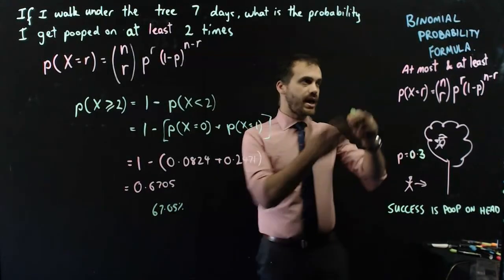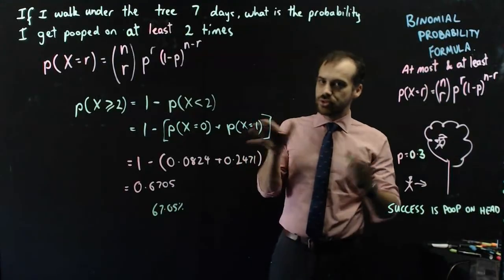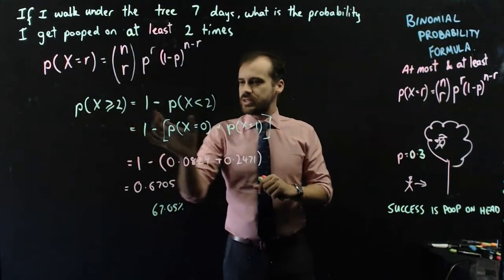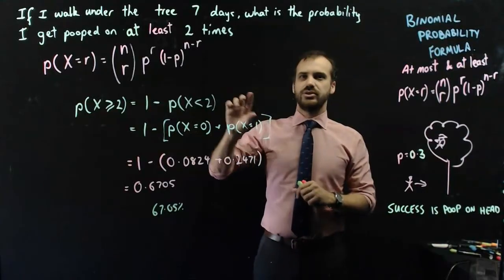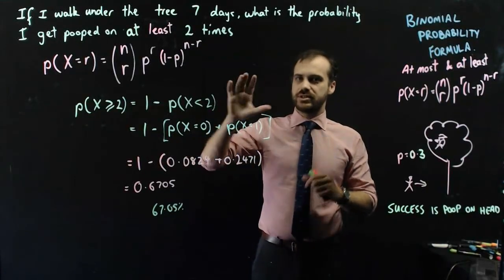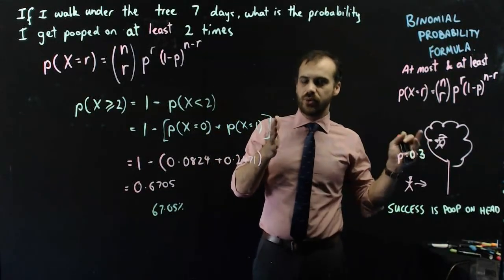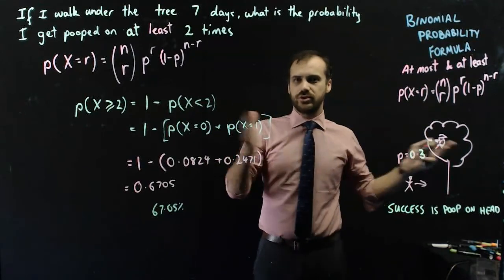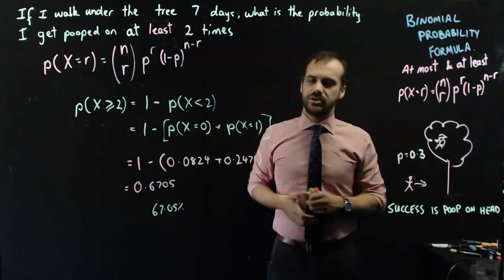Okay, that's at most and at least, two key skills there. You might need to add a bunch together, but you can also do 1 minus if it looks like there's going to be more than you want to do in your calculations. So be smart about how you do your calculations.